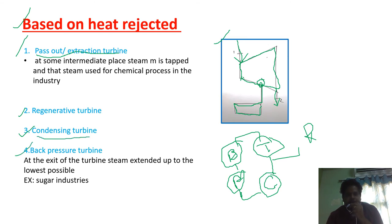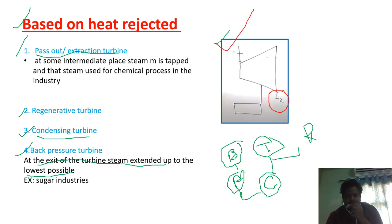The last type is the back pressure turbine. At the exit of the turbine, steam has expanded to the lowest possible pressure. After expanding through the turbine, at point 0.2, the steam will still have some energy, and that energy will be fully used for other purposes. For example, it is used in sugar industries, which operate at very low pressure. This is an example of a back pressure turbine.